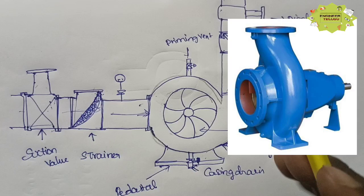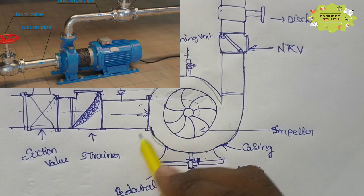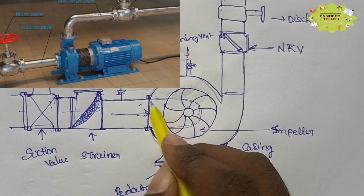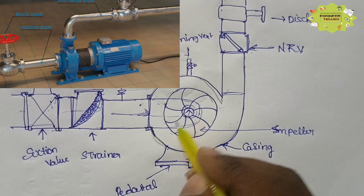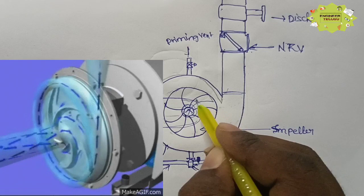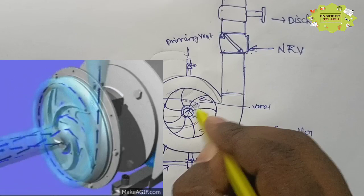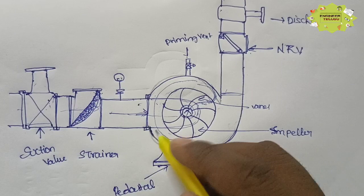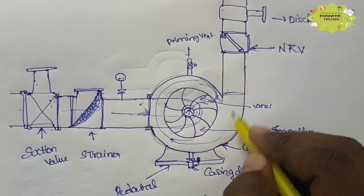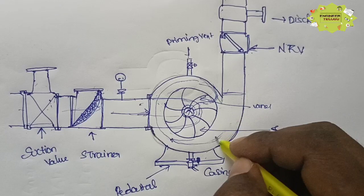The casing is a big volute shape and it is closed. The suction pipe connects at the inlet flange. The flow enters from the center and the impeller rotates from the center, converting velocity energy into pressure energy. The casing is the first stage where flow is directed. This is the impeller.